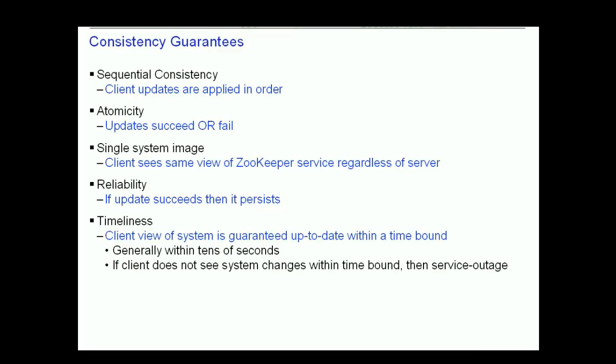ZooKeeper provides six consistency guarantees. The first is sequential consistency, meaning updates from a client are applied in the order they are sent. The atomicity guarantee means that updates either succeed or fail — partial updates are not allowed. The single system image guarantee states that a client will see the same view of the ZooKeeper service regardless of which server in the ensemble it is connected to. The reliability guarantee means that if an update succeeds, it will persist and not be rolled back — it will only be overridden when another client performs a new update. Finally, the timeliness guarantee means that a client's view of the system is guaranteed to be up to date within a certain time bound, generally within tens of seconds. If a client does not see system changes within that time bound, then the client assumes a service outage and will connect to a different server in the ensemble.